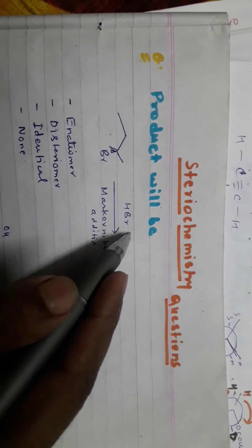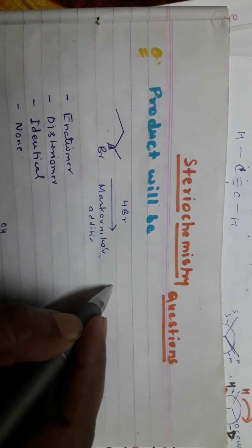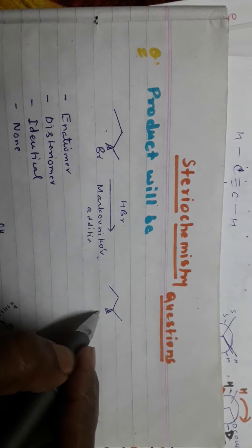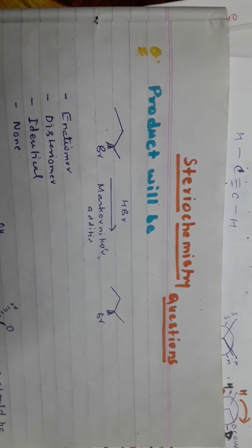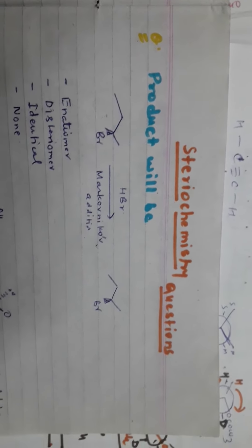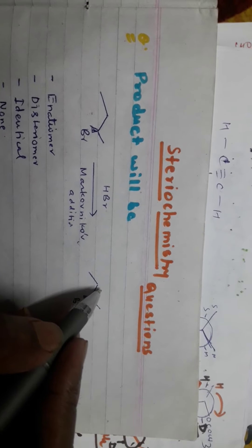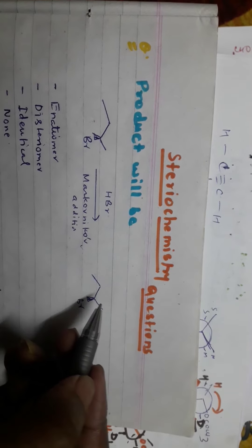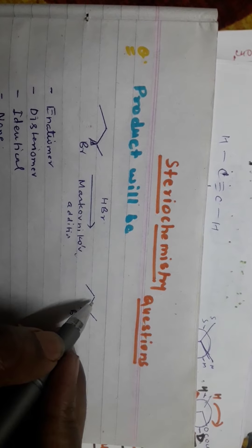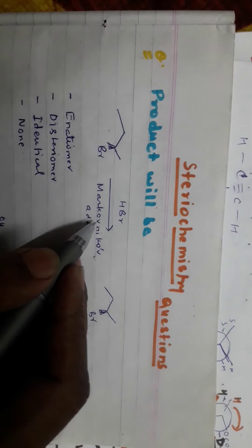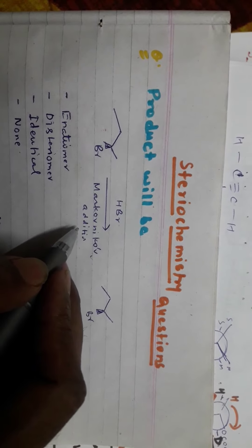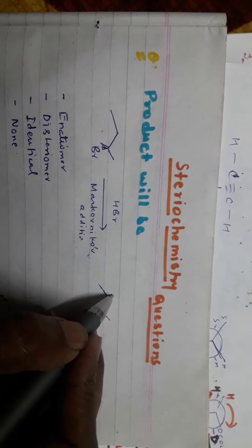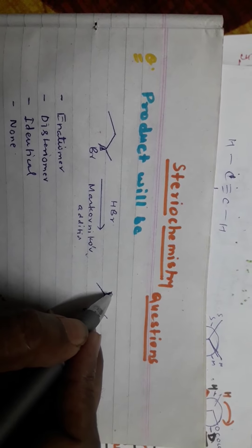In the presence of HBr, there are two probable products. One is where the bromine will be fixed on one position and anti-addition should occur. However, anti-addition does not take place here because Markovnikov's rule is preferred in this addition. So your product should be the Markovnikov product.